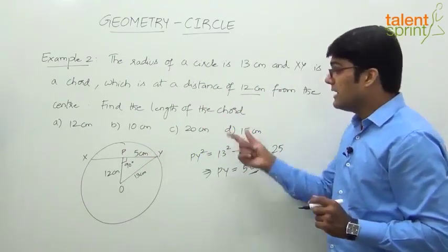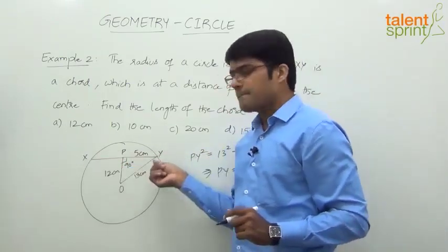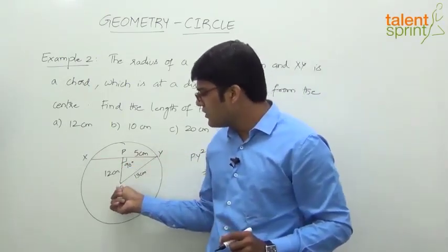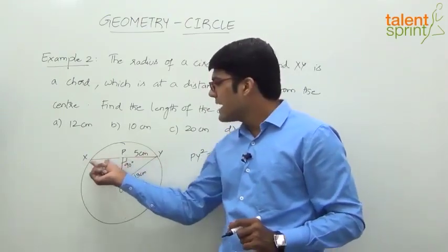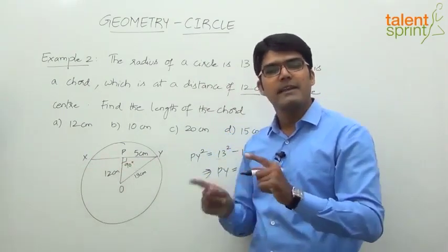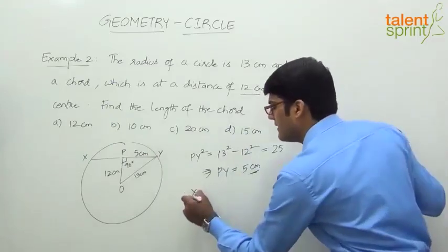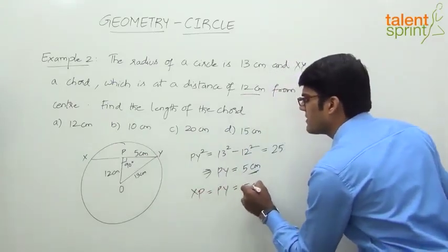But remember, the question says find the length of the chord. Length of the chord is XY. Now we know that from the center when you draw a perpendicular on the chord, it bisects the chord, which means XP will be equal to PY. It will divide it into two equal halves. XP is equal to PY, which is equal to 5 centimeters.